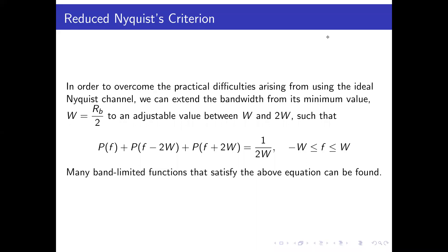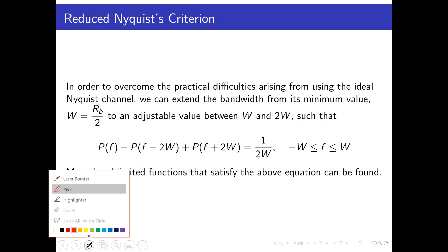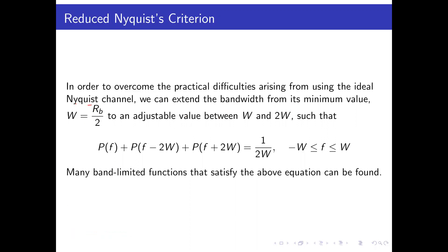In order to overcome the practical difficulties arising from using the ideal Nyquist channel — specifically the slow decay of the ideal Nyquist pulse and its very sharp transition from high amplitude to zero — we need to extend the bandwidth from its minimum value of Rb/2 or 1/(2Tb) to an adjustable value between W and 2W.